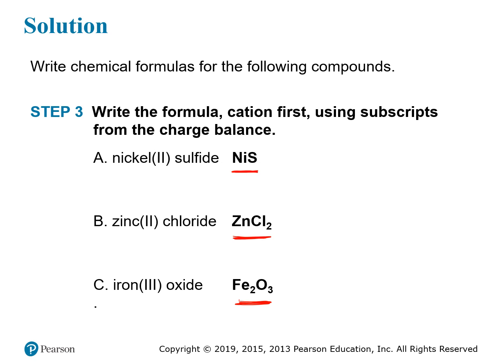Looking at Fe2O3 as a shortcut example: Fe3+ is the cation and O2- is the anion. You can take the charge on the metal and bring it as the subscript for the non-metal, and the charge on the non-metal and bring it as the subscript for the metal, ending up with Fe2O3. This shortcut works sometimes, but you have to be careful because sometimes you still need to reduce the whole number ratio.